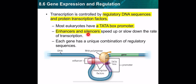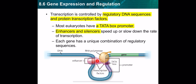Enhancers speed up and silencers slow down the transcription process according to the cell's needs — whether the cell needs a protein urgently or wants to delay its formation. Each gene has a unique combination of regulatory sequences. The RNA polymerase binds to the promoter, and there are sequences like the TATA box along with enhancers or silencers to control the rate of transcription.